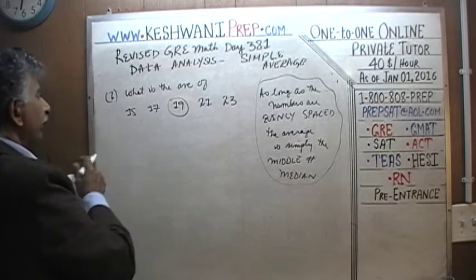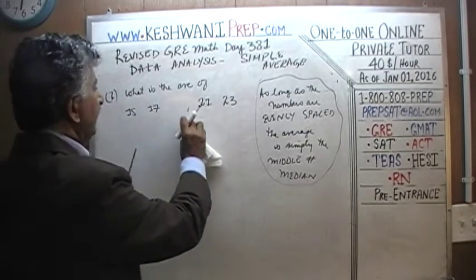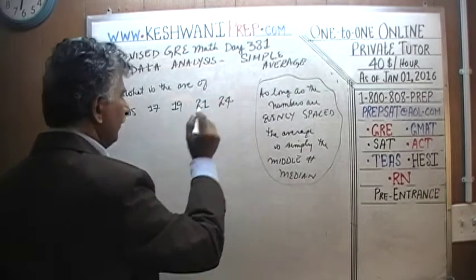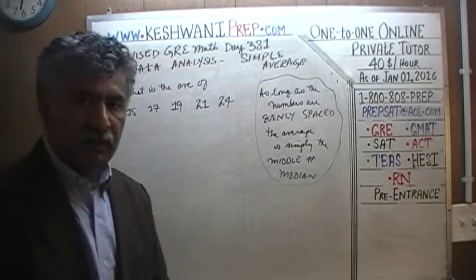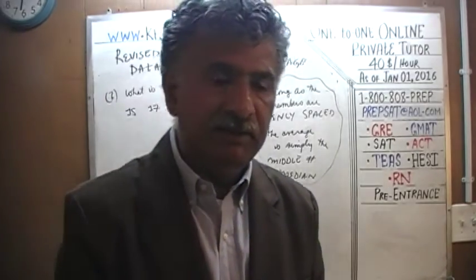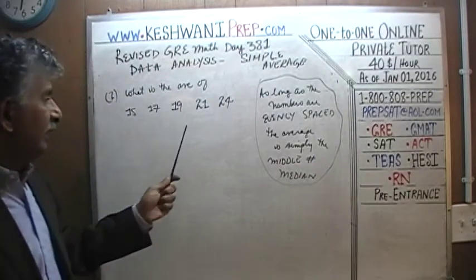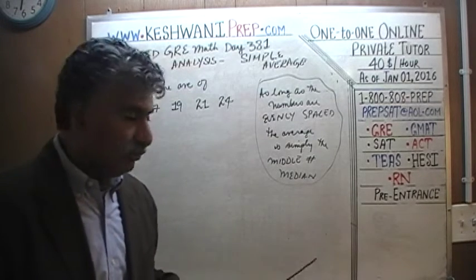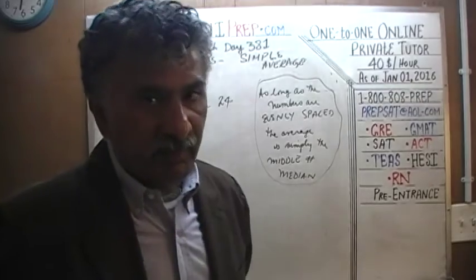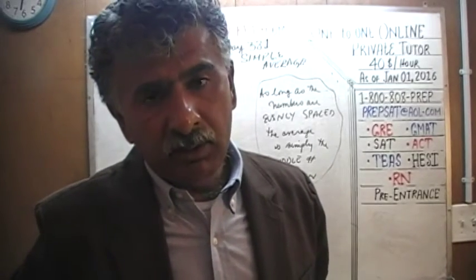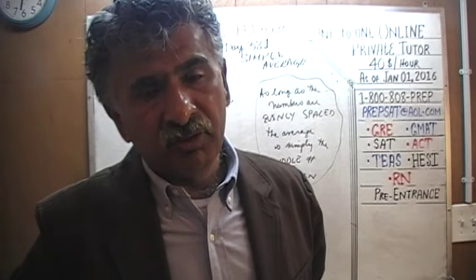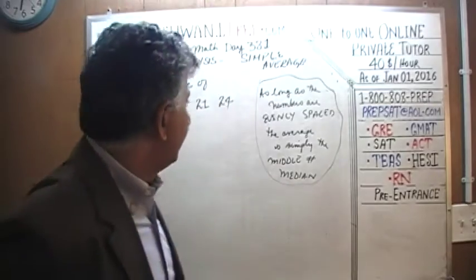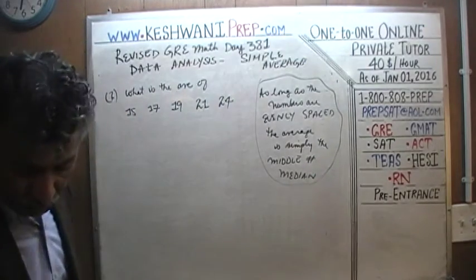Number 2: what's the average of 15, 17, 19, 21, and 24? The first thing we always do on the exam when asked to find any kind of average is to see if the numbers are evenly spaced. And if they are not, ask yourself: what is the odd thing here, how is it that they are not evenly spaced? Well, the problem here is that this 24 should have been 23.